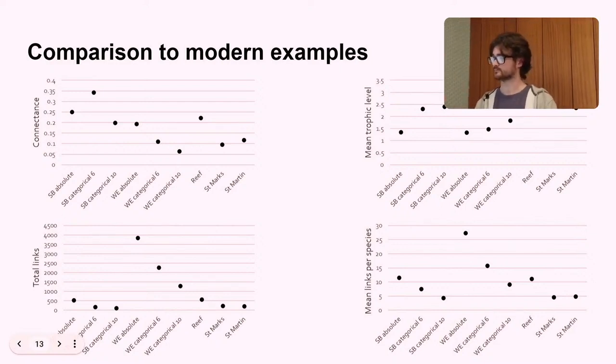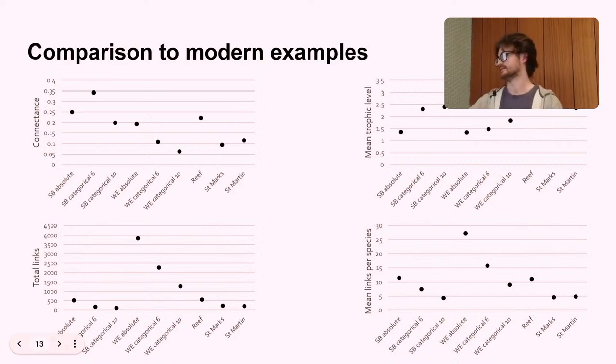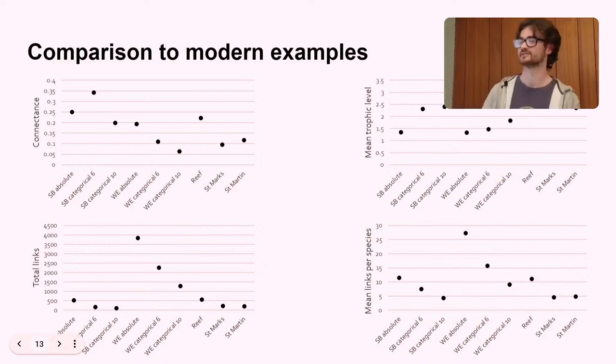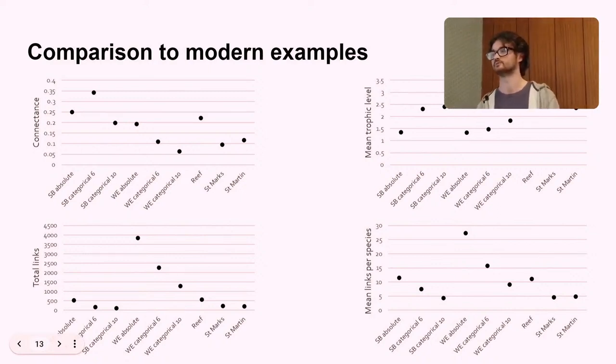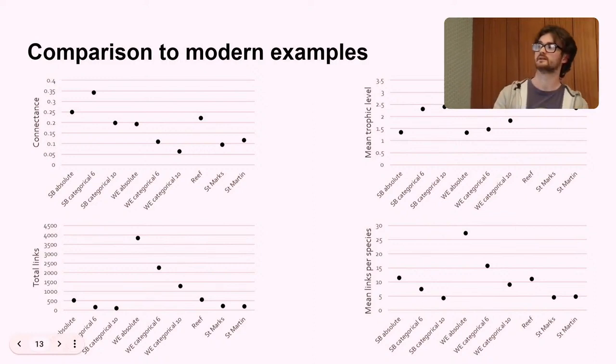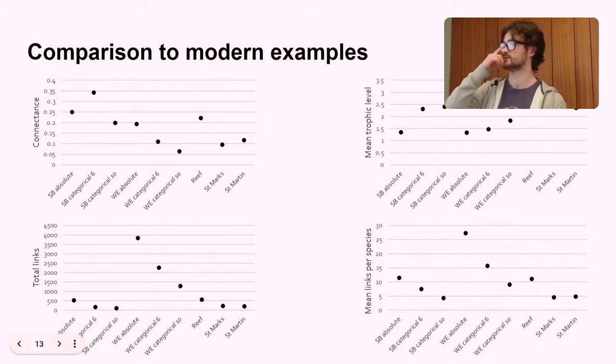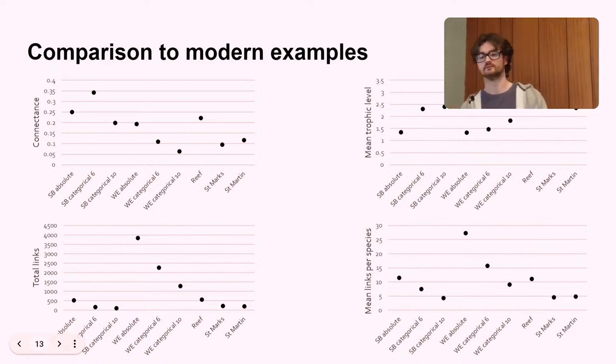And then mean links per species is a similar pattern. Again, it goes down as the rules become more restrictive because organisms are not allowed to interact with as many. So the Western Europe webs weren't that similar in the end to the modern examples. I think part of that, a big part of that, was probably just because the data set was so much bigger. Whereas the strawberry bank data set actually was quite similar to the modern, especially for strawberry bank categorical 10, when those size rules were the most restrictive. And so that would suggest that having more restrictive size rules actually produced a more modern structure.